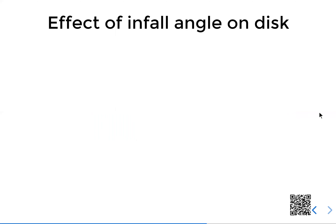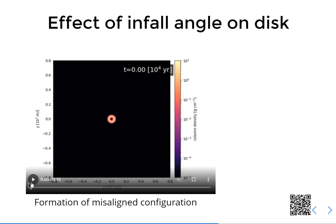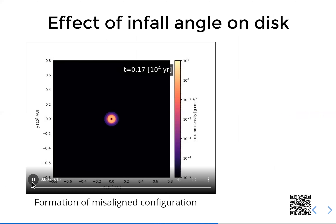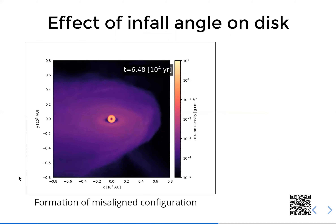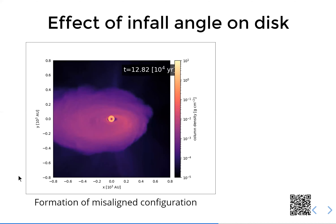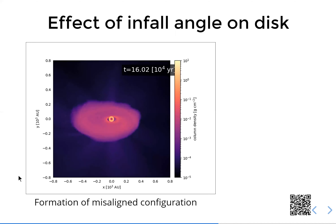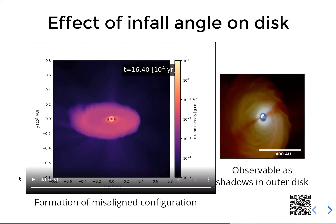But what about the more exciting cases of non-zero inclination? You can see this video with infall at an inclination of 60 degrees. Not surprisingly, you have the inner disk and you form an outer disk around it. Interestingly, when you post-process this data, you can see that the inner disk can in fact cast a shadow on the outer disk — so we expect this to be possibly observable.